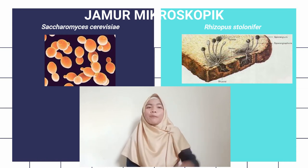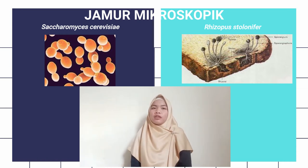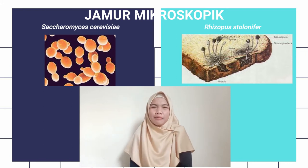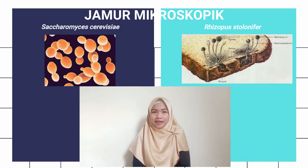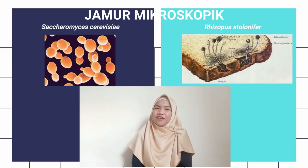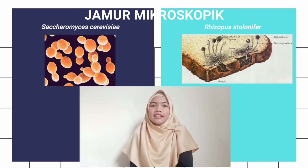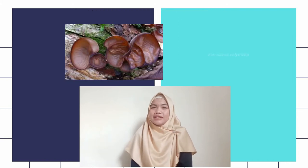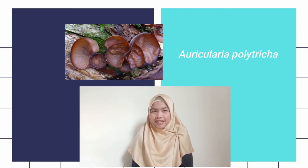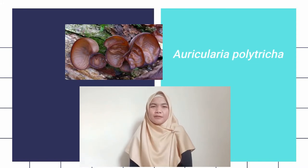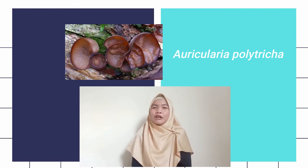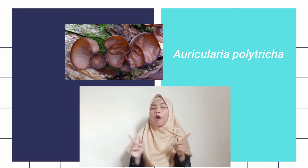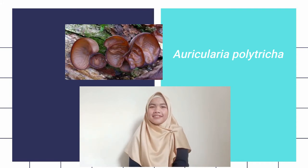Untuk jenis jamur yang multiseluler bisa kalian temukan pada roti yang telah membusuk. Pada roti yang telah membusuk, terdapat jamur yang bernama Rhizopus stolonifer. Sekarang kalian sudah tahu kan jenis jamur yang ada di sekitar kalian. Untuk jamur yang makroskopik, hanya terdiri dari satu jenis yaitu jamur yang multiseluler, contohnya Auricularia polytrica.